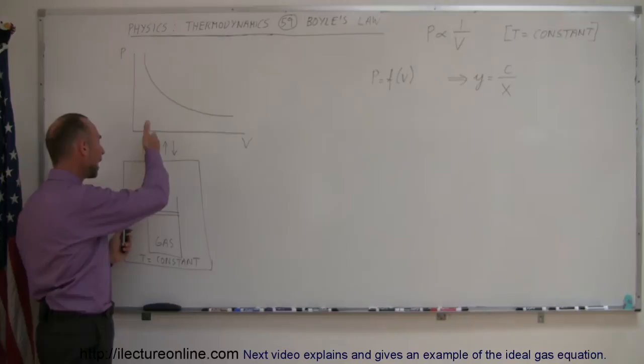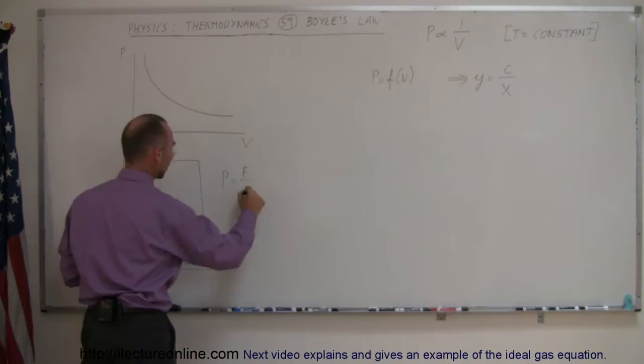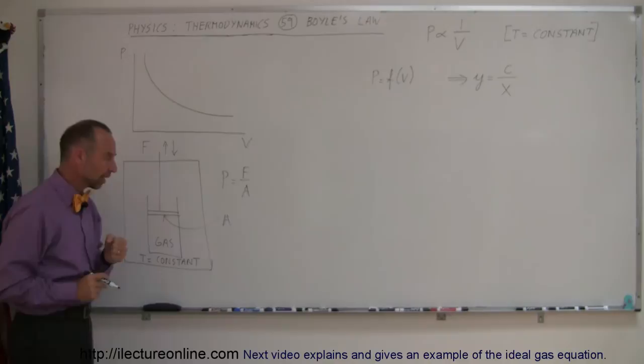And what he would do is he would apply more force to something like a cylinder like this. When he pushed down on it, he'd increase the pressure. Remember that pressure is equal to force divided by area. So we have the cross-sectional area of the piston right here, and then the force pushed down on the piston.